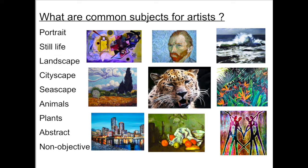Here are some common subjects for artists. I put together a few that would match the words on the left. Can you find the portrait? A portrait is a picture of a person. The still life are objects on a table that are still. A landscape, cityscape, and seascape are different kinds of outdoor scenes.